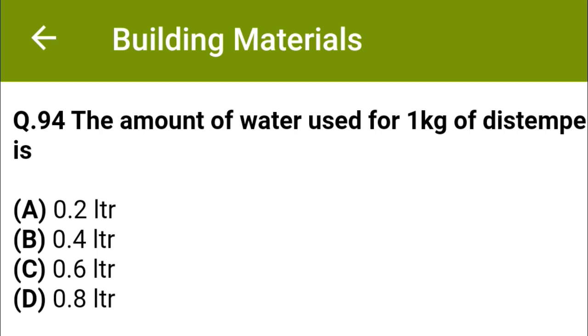The amount of water used for 1 kg of distemper is: option A, 0.2 litre; option B, 0.4 litre; option C, 0.6 litre; option D, 0.8 litre. The correct answer is option C, 0.6 litre.